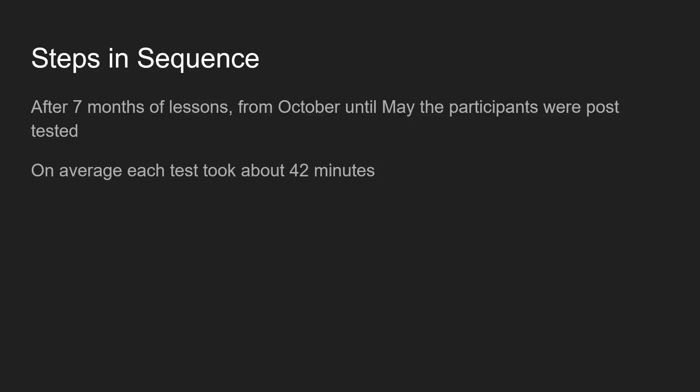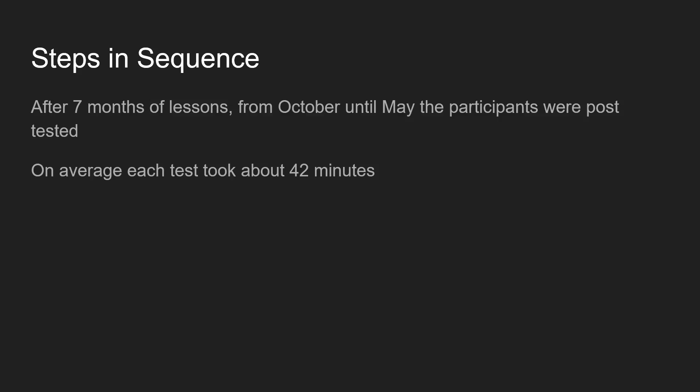Over the course of seven months, from October to May, participants were tested. On average, each post-test took about 42 minutes, compared to the 30-minute average from the pre-test. The article also describes under the treatments section what the embedded multimedia presentations looked like. Inside Success for All, there was Animated Alphabet, The Sound and Fury, Between the Lions, and Word Plays.